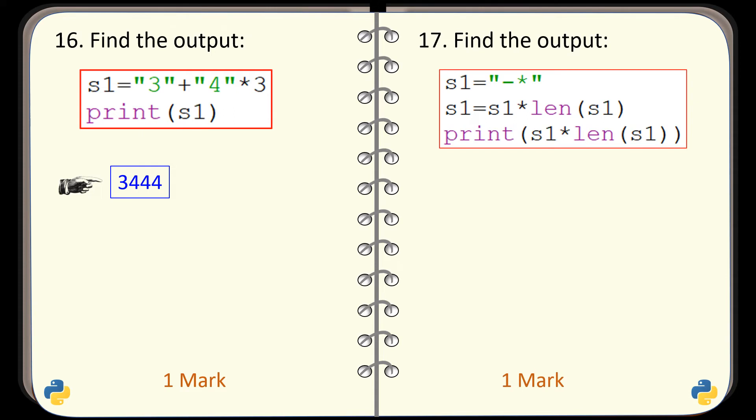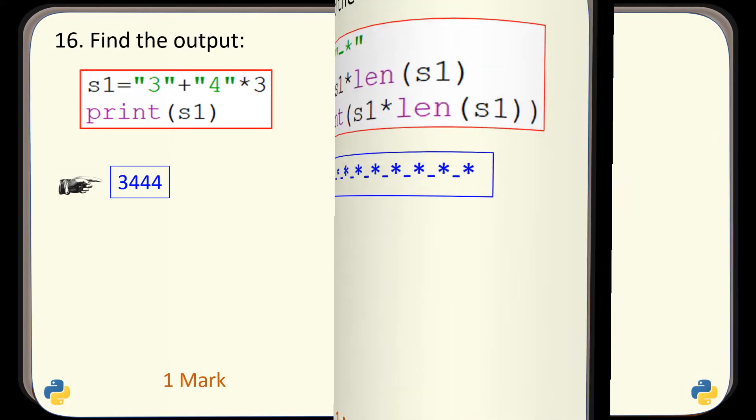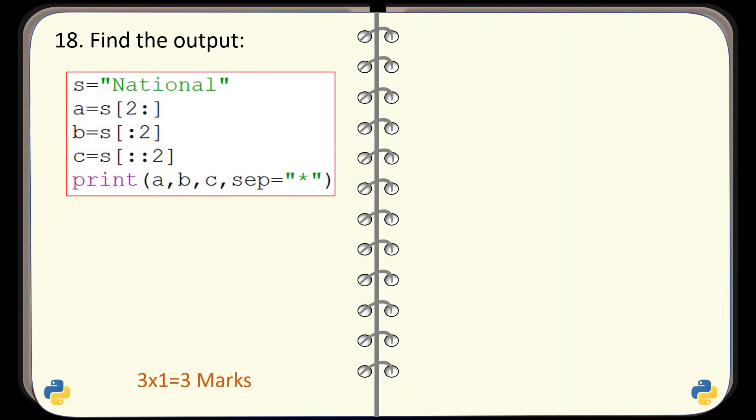Question number 17. Find the output generated by this code. And the output generated is this one. Question number 18. Find the output generated by this given code. And the output generated is this one.